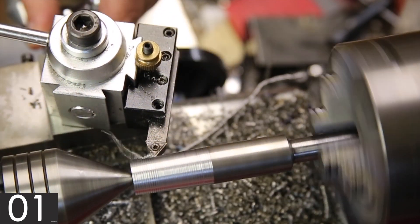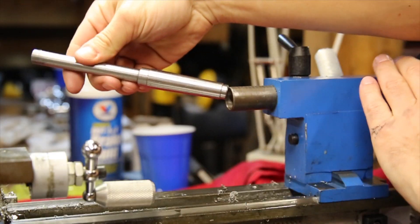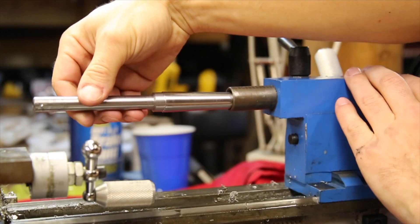After you reach the correct minimum and maximum diameter measurements, quickly admire your work and try testing the fit in the tailstock. Ideally, it should not wiggle and be difficult to remove.